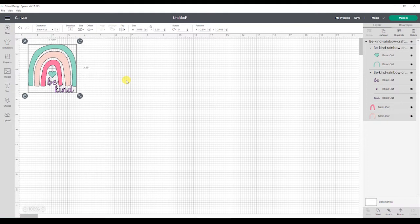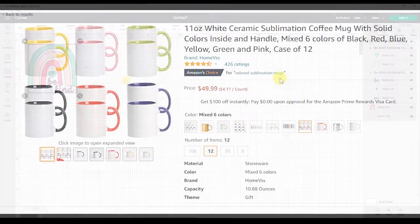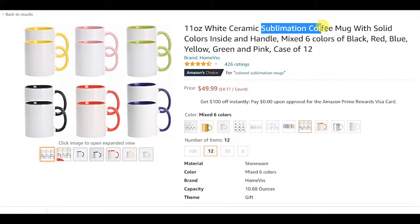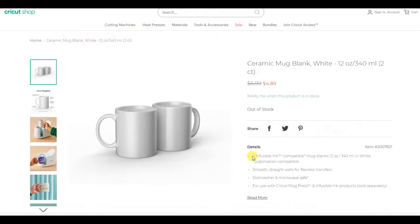I also just want to note really quick that the type of mug you are using is very important when you are using infusible ink and the mug press. You cannot just use any mug you find at the store or in your house. The mug has to be a sublimation mug otherwise the infusible ink will not infuse to the mug. I've linked the mug that I'm using today below but you can also use Cricut brand sublimation mugs.